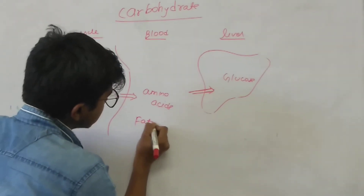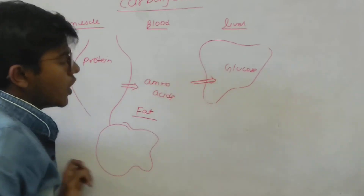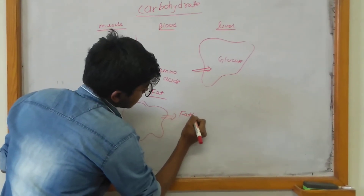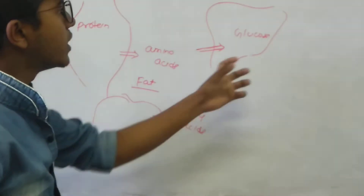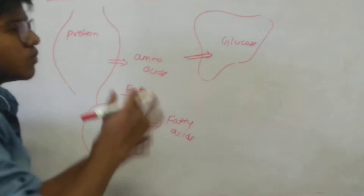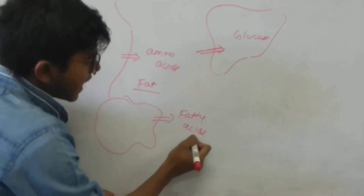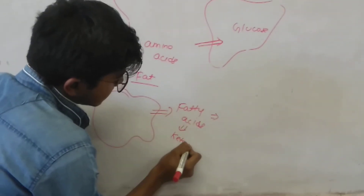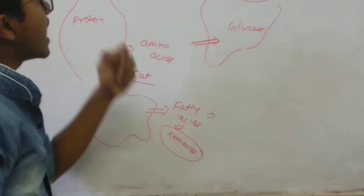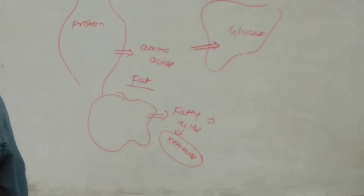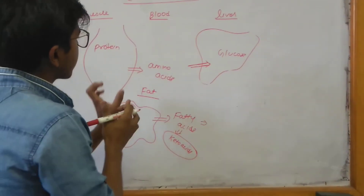Coming on to fat metabolism: the adipocytes are broken down in order to release fatty acids into the blood. These fatty acids go into the liver for the formation of glucose or other energy substances. If there is excess secretion of glucocorticoids, fatty acids are produced beyond the energy demand of the body and tend to form keto acids. Hence glucocorticoids are also known as ketogenic hormones.